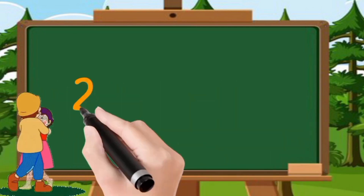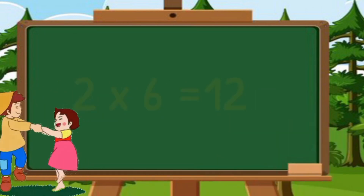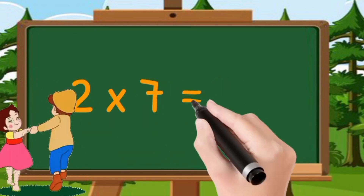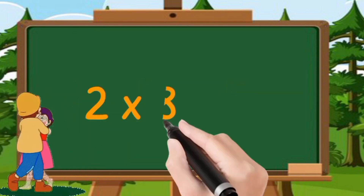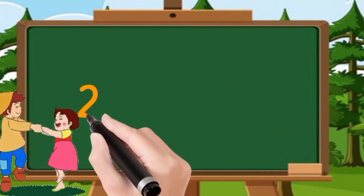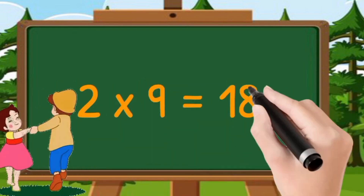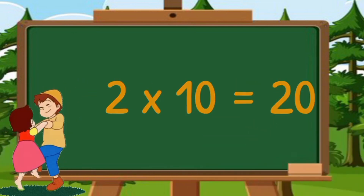Two sixes are twelve. Two sevens are fourteen. Two eights are sixteen. Two nines are eighteen. Two tens are twenty.